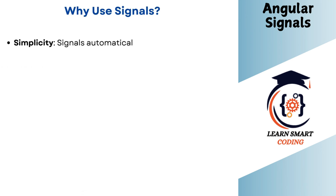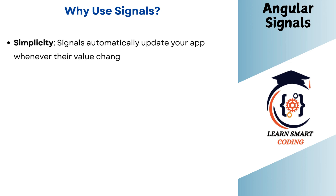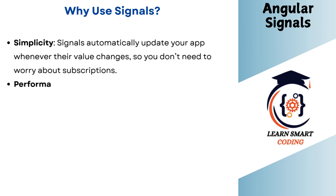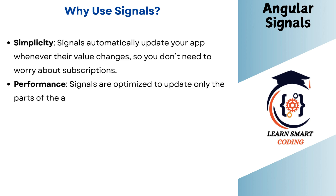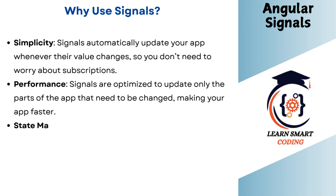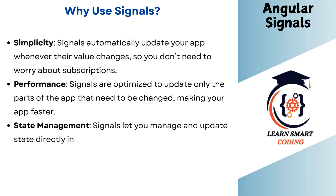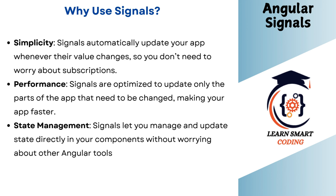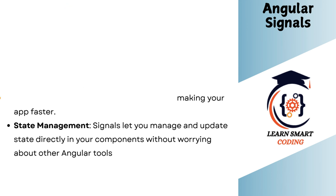Why use Angular Signals? It has three important benefits: simplicity, performance, and state management. For simplicity, signals automatically update your app whenever their value changes, so you don't need to worry about subscriptions. For performance, signals are optimized to update only the part of the app that needs to change, making your app much faster. For state management, signals let you manage and update state directly in your components without worrying about other Angular tools.